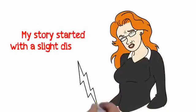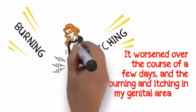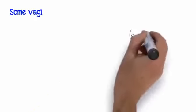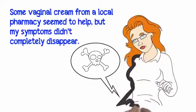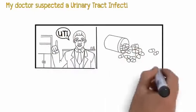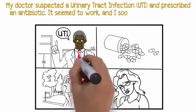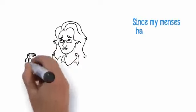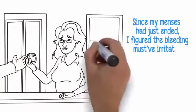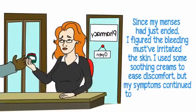My story started with a slight discharge. It worsened over the course of a few days, and the burning and itching in my genital area also became unbearable. Some vaginal cream from a local pharmacy seemed to help, but my symptoms didn't completely disappear. Then they suddenly got worse. My doctor suspected a urinary tract infection and prescribed an antibiotic.